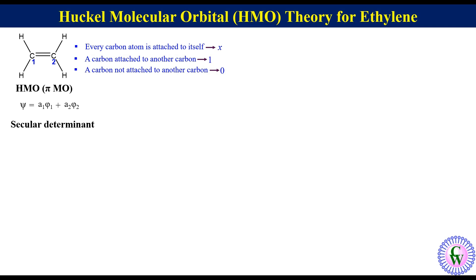Now let's make the determinant. First consider C1. Since C1 is attached to itself, put x here, and C1 is attached to C2, so put 1 here. Now consider C2. Since C2 is attached to C1, put 1 here, and C2 is attached to itself, so put x.